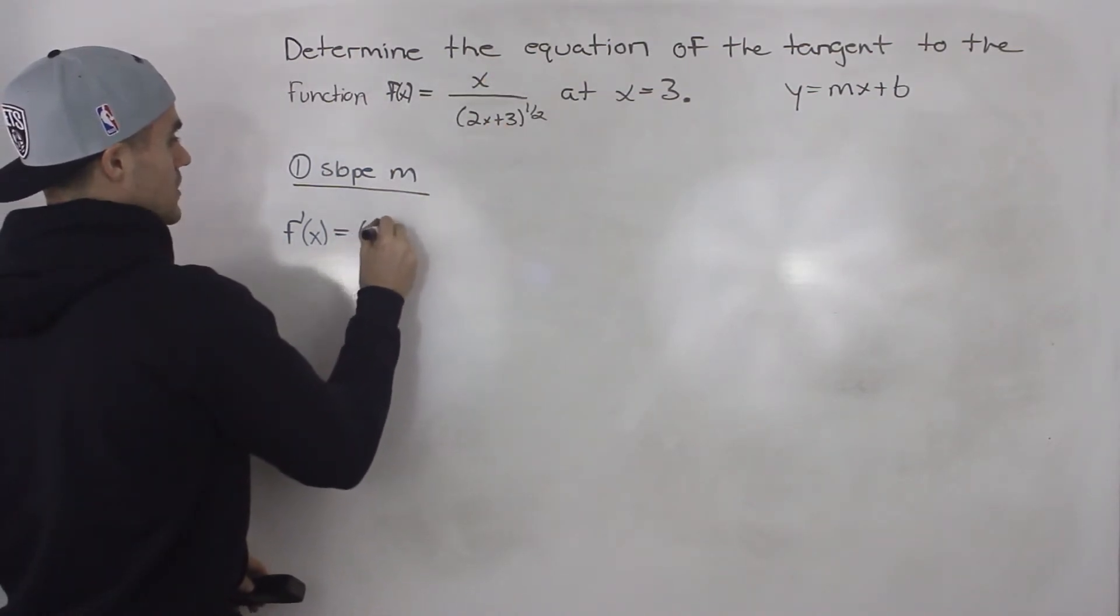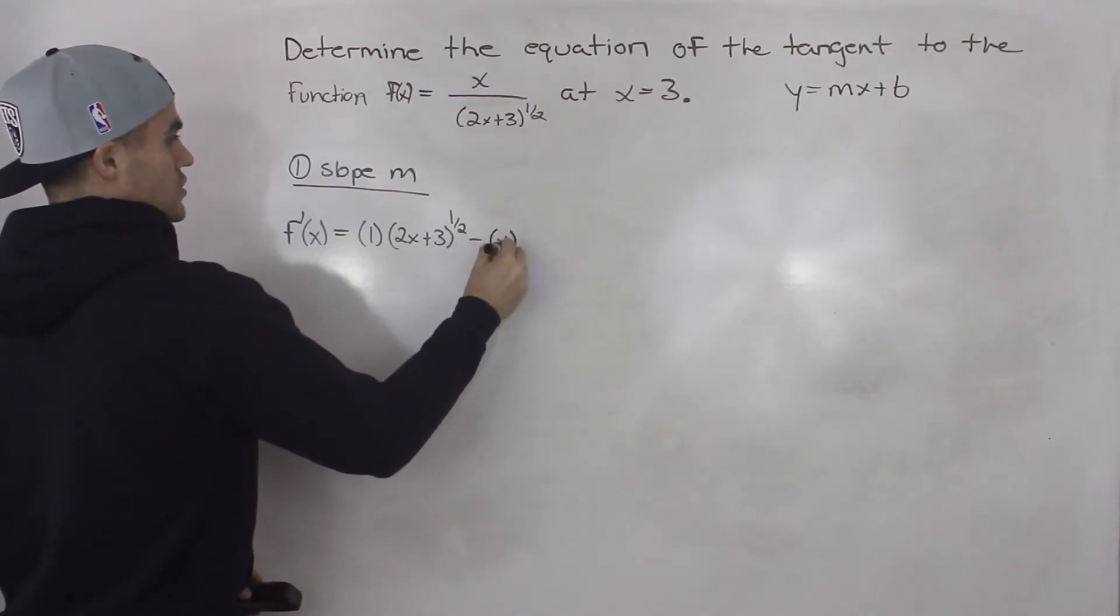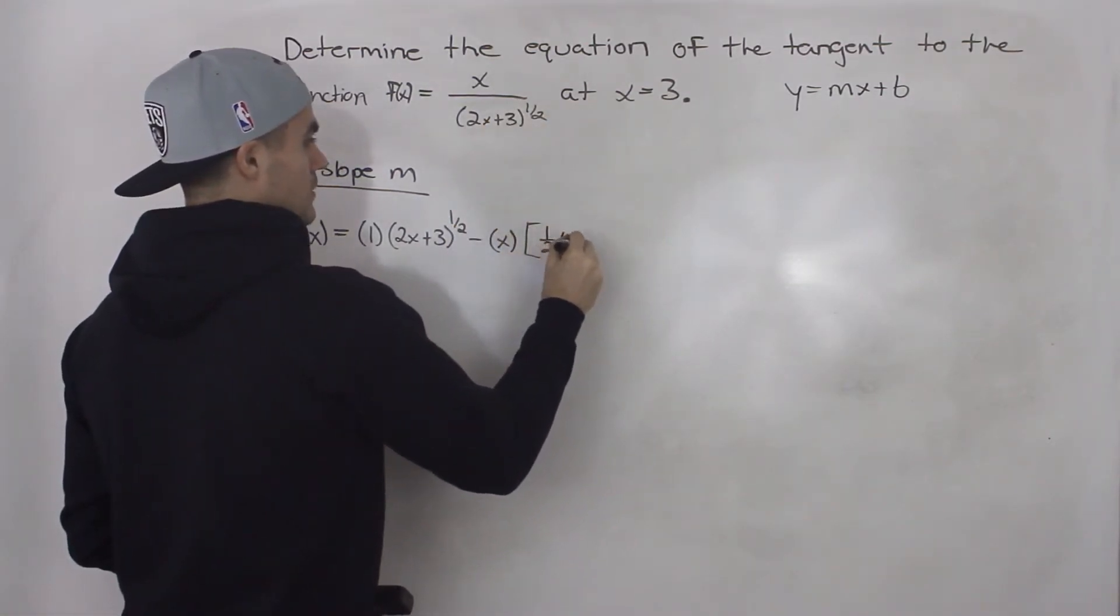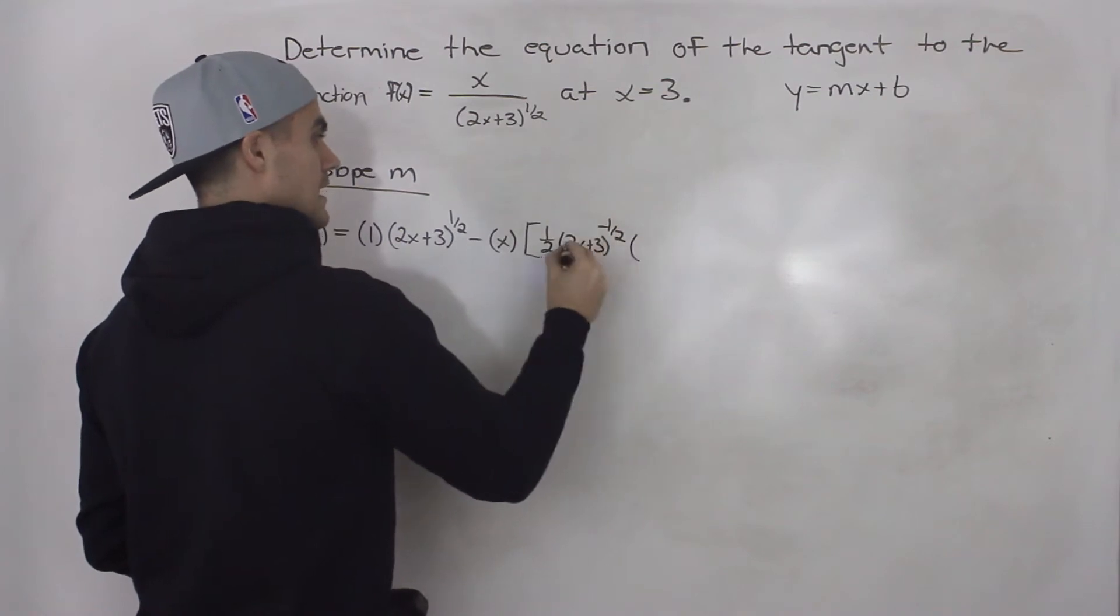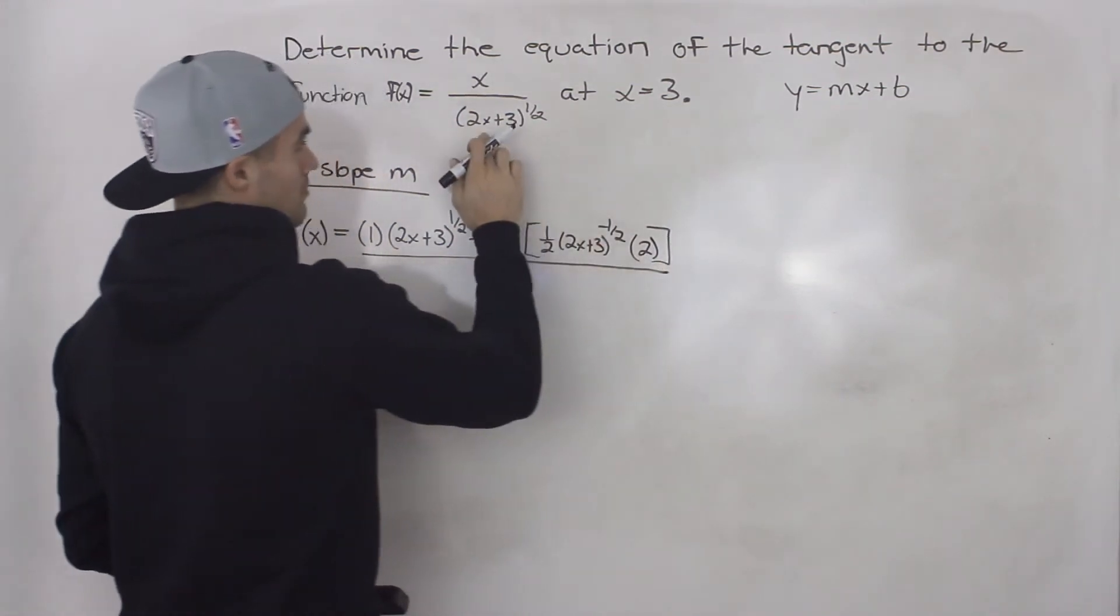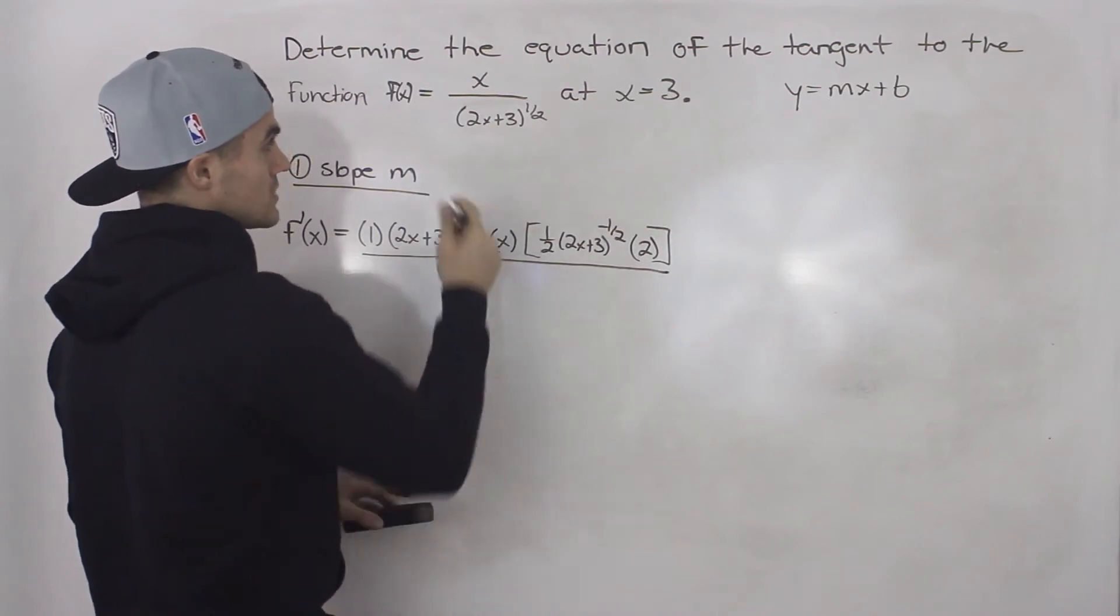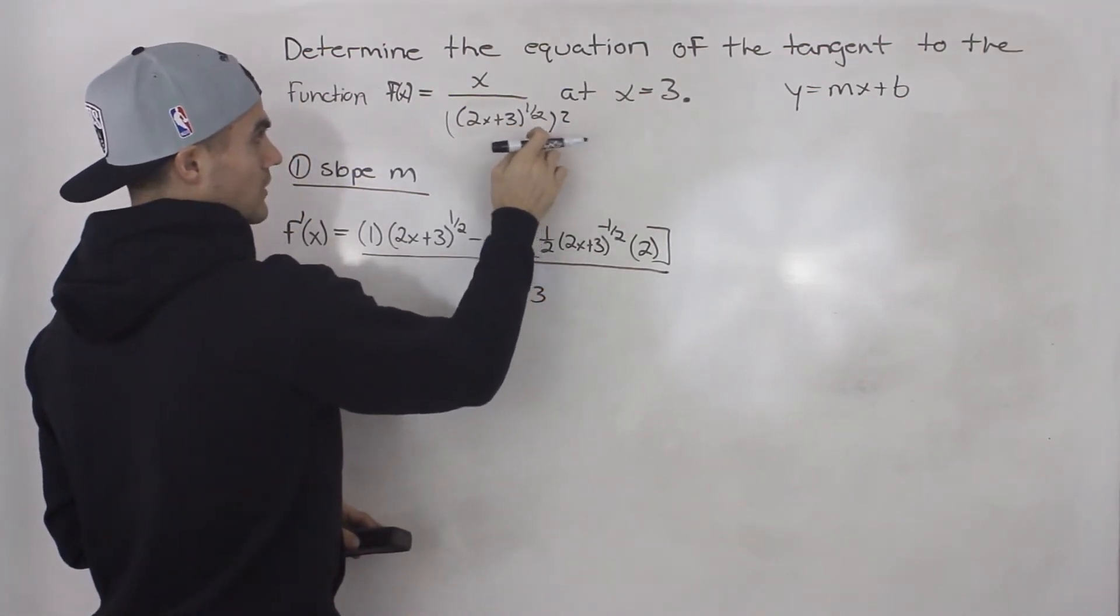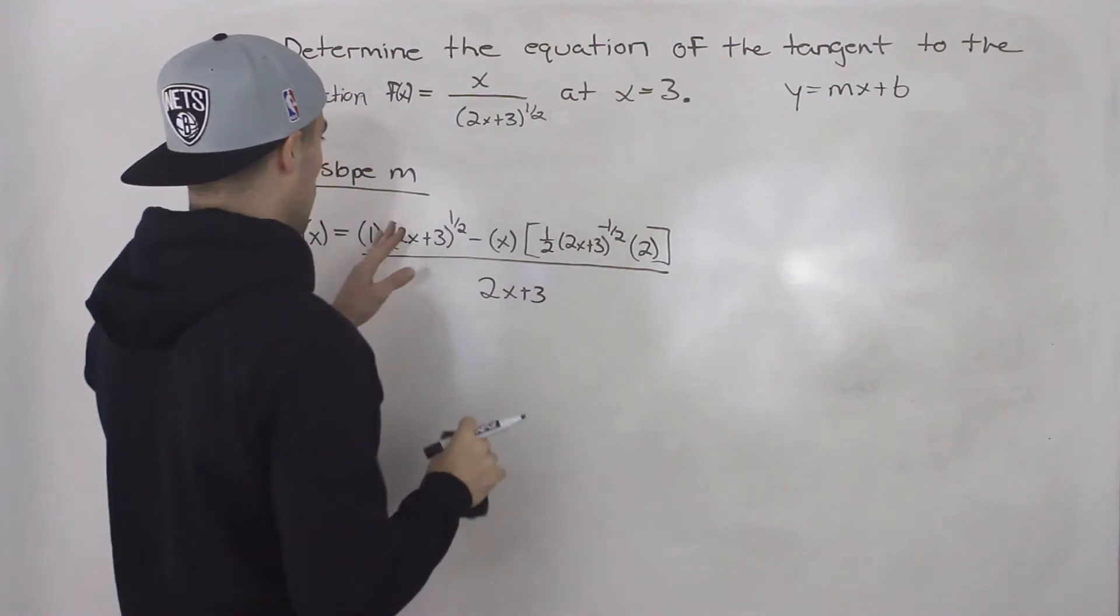And then you just apply the quotient rule. So you take the derivative of the numerator, which is 1, times the bottom function, 2x plus 3 to the half, minus the top function, as is, x, times the derivative of the bottom function. So we bring the one half down, 2x plus 3 to the power of negative one half, one half minus one is a negative one half, times the derivative of the inner function, which is 2. And then that's going to be all over the bottom function squared. But since the bottom function is just the square root of 2x plus 3, the square root of 2x plus 3 squared would just give us 2x plus 3 at the bottom. One half times 2 is 1, 2x plus 3 to the power of 1 is just 2x plus 3.